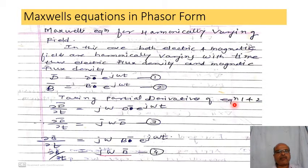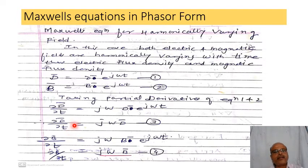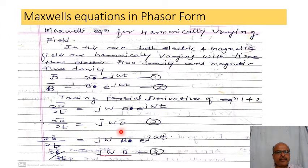Taking the partial derivative of equations one and two: the partial derivative of D-bar with respect to t gives j-omega times D-bar times e raised to j-omega-t. Observing carefully, D-zero or D-bar times e raised to j-omega-t equals D-bar. Substituting that value, we get partial D-bar by partial t equals j-omega D-bar — equation number three.